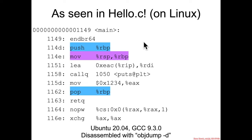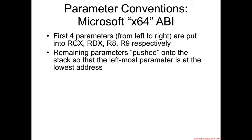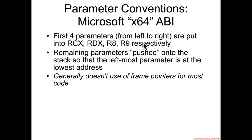That sounds like it's doing the same thing that 32-bit calling conventions were doing. Let's look into it. Regarding the Microsoft x64 ABI, it generally does not make use of frame pointers for most code.